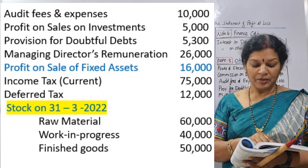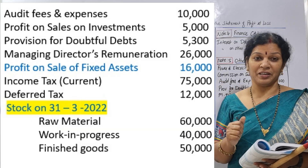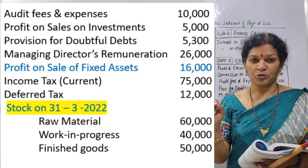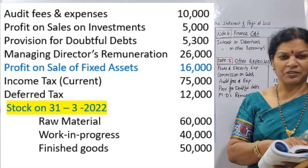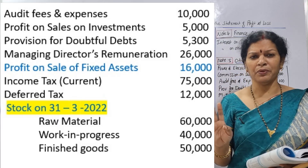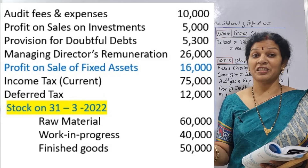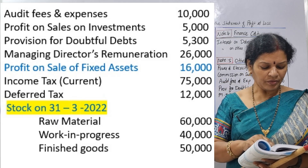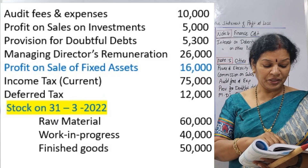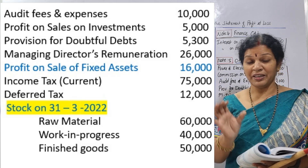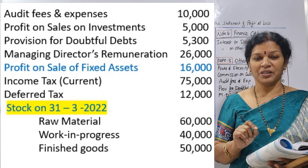Profit on sale of fixed assets is a special income — it is an exceptional item. We will adjust it in the exceptional item row of the format. Lastly, income tax of 75,000 and deferred tax of 12,000 are the taxes. Revenue minus expenses gives us profit, from which we then deduct taxes.